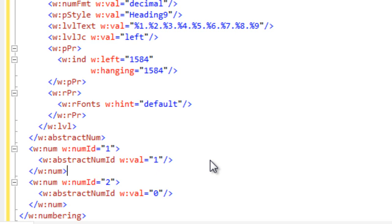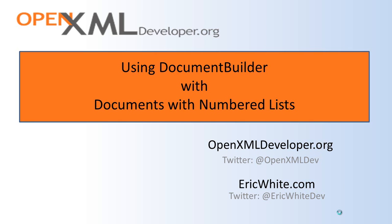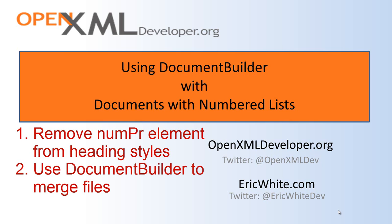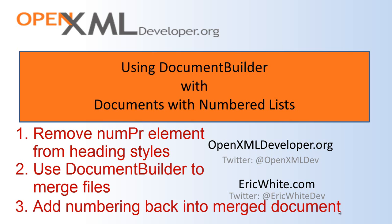What we're really interested in today is merging these two documents so that numbering is set up properly when we're done. The strategy is: first, remove the numbering from Heading 1, Heading 2, Heading 3, and so on — remove the numPr element from all heading styles. This removes numbering from all source documents. Then use Document Builder to merge them normally. After merging, go back in and add numbering back into the merged document.